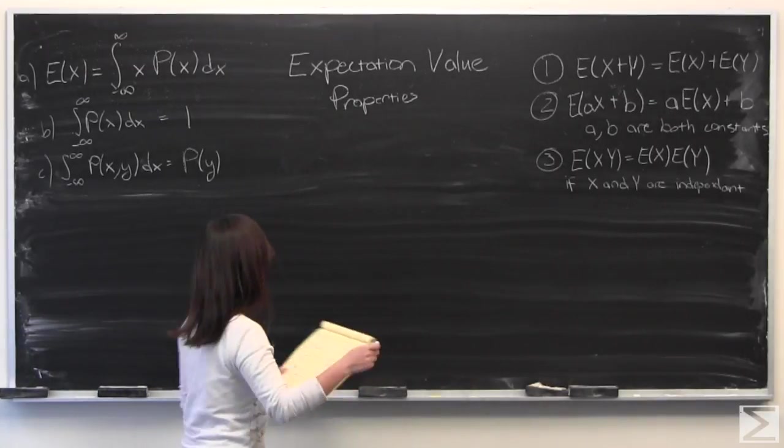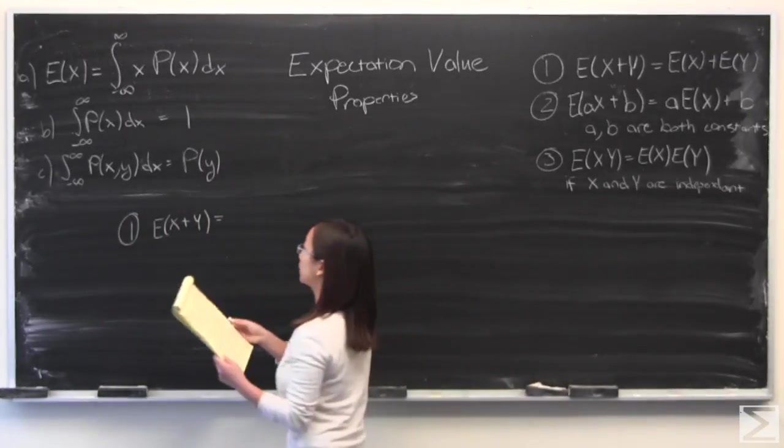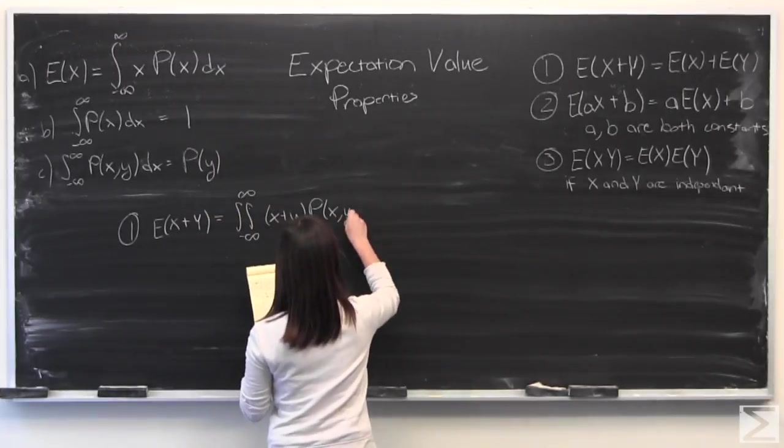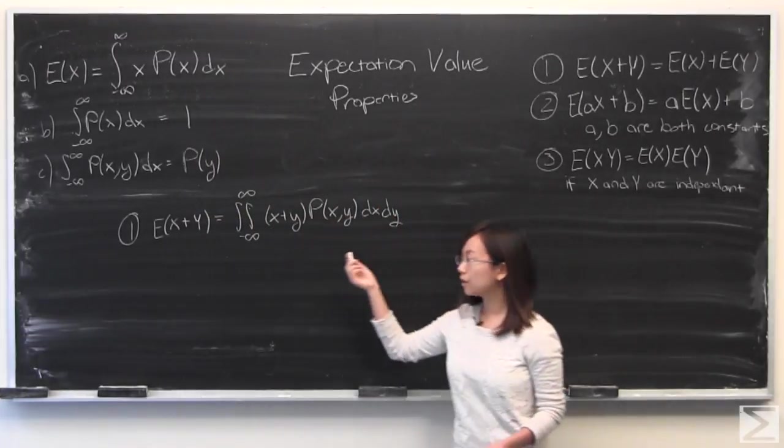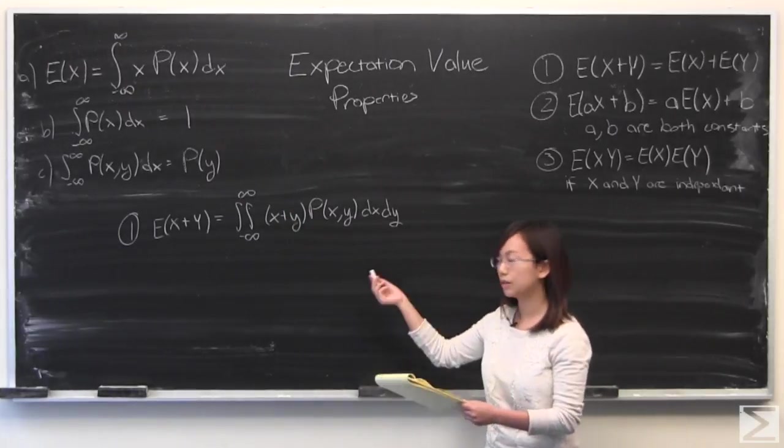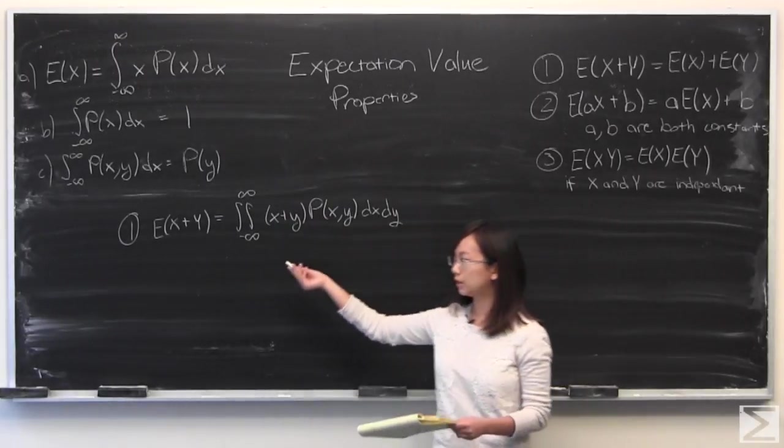Without further ado, I'll start with number 1. I'm going to use that definition of expectation value. Hopefully you're willing to accept this is the case because we're using property 1 up there. We're also using a joint probability density function. Therefore, E(X+Y) is equal to this.